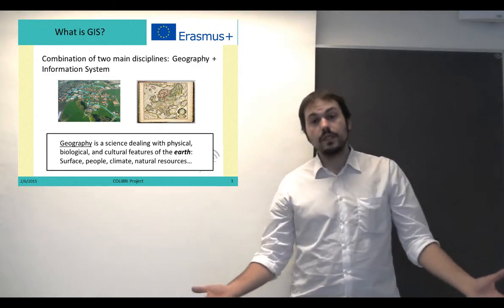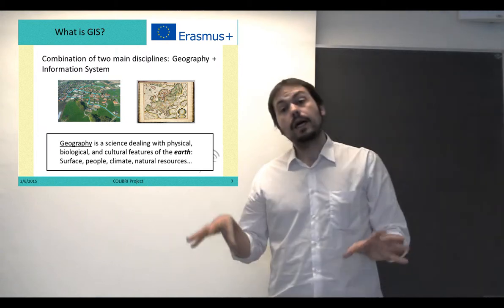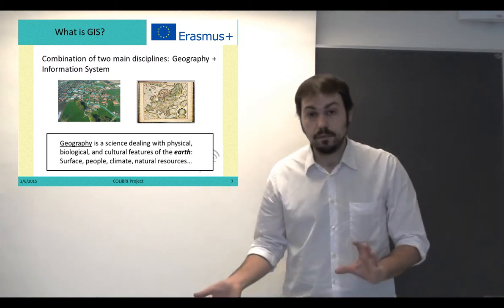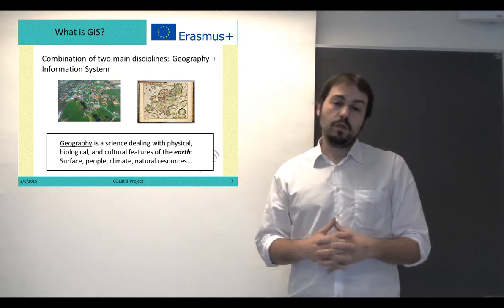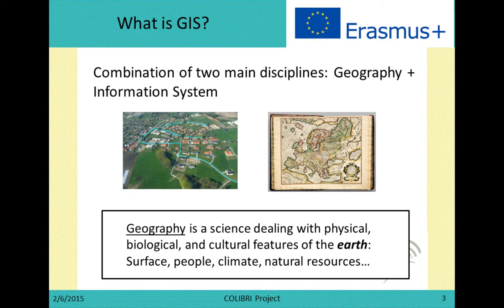What is GIS? Obviously, it is the combination between geography and information systems. I am sure that all of you know what geography is, but formally defined, geography is a science dealing with physical, biological, and cultural features of the earth's surface — people, climate, natural resources, etc.